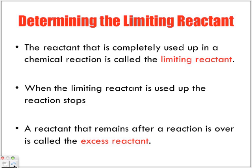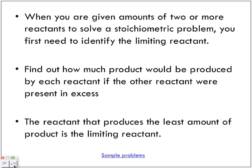A reactant that remains after a reaction is over is called the excess reactant — whatever is left over, whatever didn't get broken down, is considered in excess. When given amounts of two or more reactants to solve a stoichiometric problem, you first need to identify the limiting reactant. Find out how much product would be produced by each reactant if the other reactant were present in excess. The reactant that produces the least amount of product is the limiting reactant. We're going to look at stoichiometric problems and figure out which reactant runs out first and which one is left over.